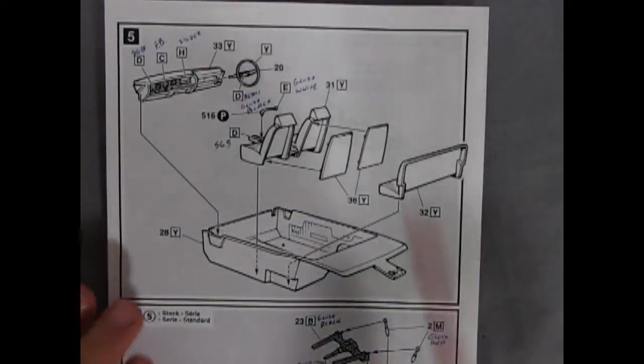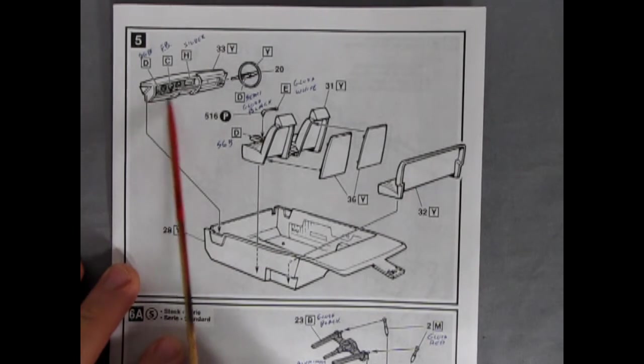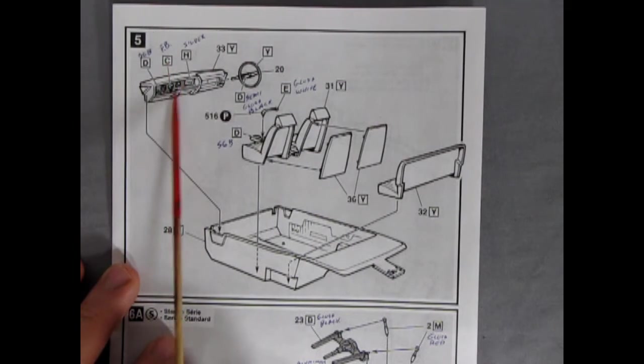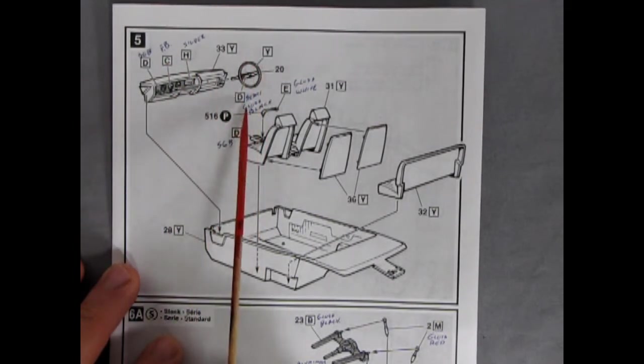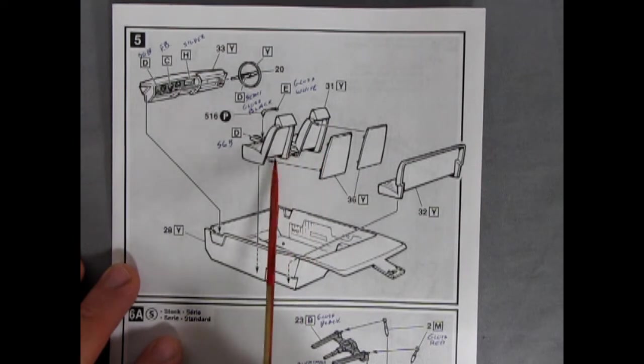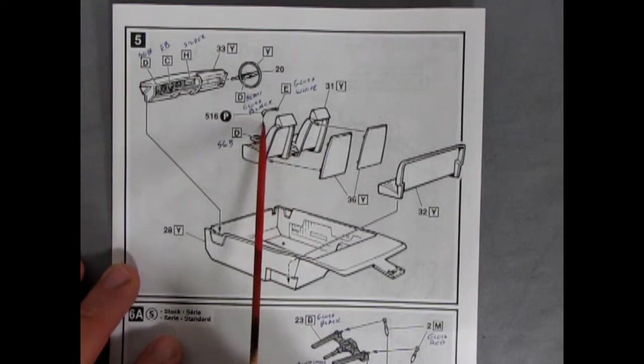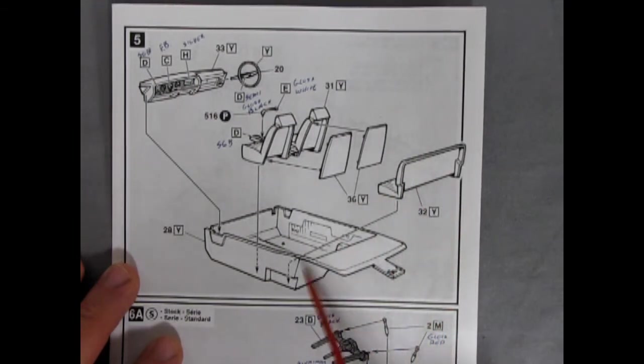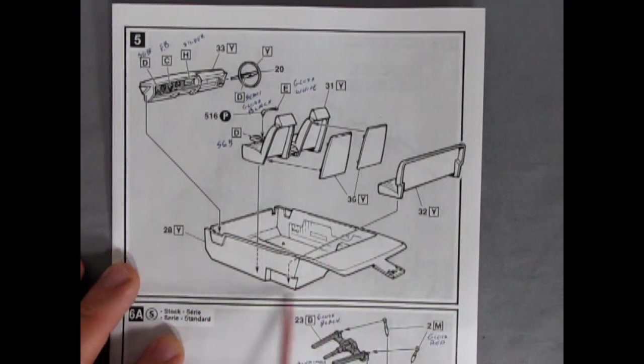Next up we have our interior panel. And there we have our nice dashboard. With all this labeled out. Semi-gloss black inside. Flat black. Silver. There's our nice steering wheel. Our two bucket seats with the console and the shift lever. Bucket seat backs. And the bench seat. All going into this interior tub. And there is the Y for the body color.